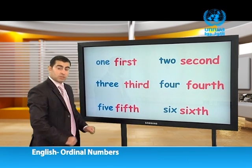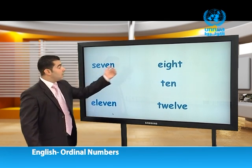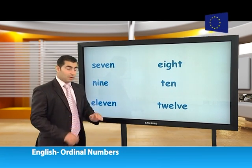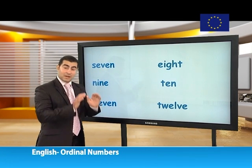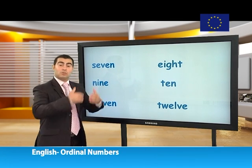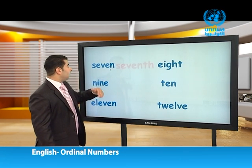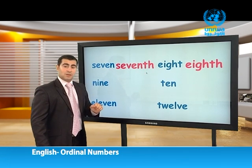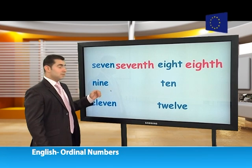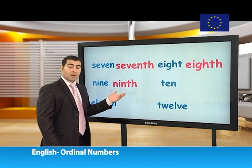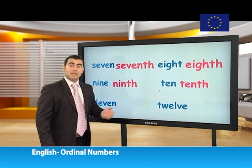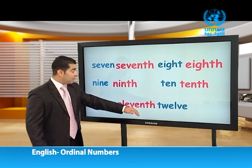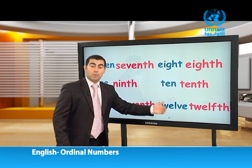Now, dear students, let's continue with the other numbers: seven, eight, nine, ten, eleven, and twelve. We add 'TH' to the end of seven — seventh, eight — eighth, nine — ninth, ten — tenth, eleven — eleventh, and finally twelve becomes twelfth. Thank you very much, that's fantastic.